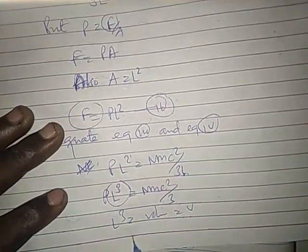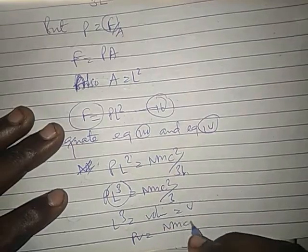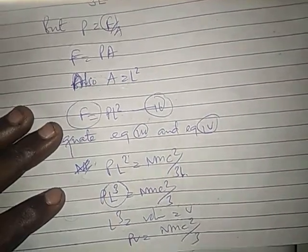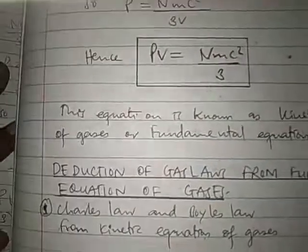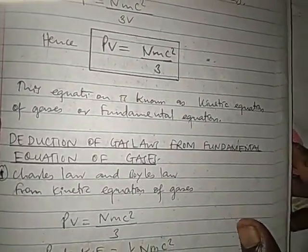So, PV equals NMC squared divided by 3. When we reach here, this becomes our last equation: PV equals NMC squared divided by 3. That is what is called the fundamental equation or the kinetic equation of gases.